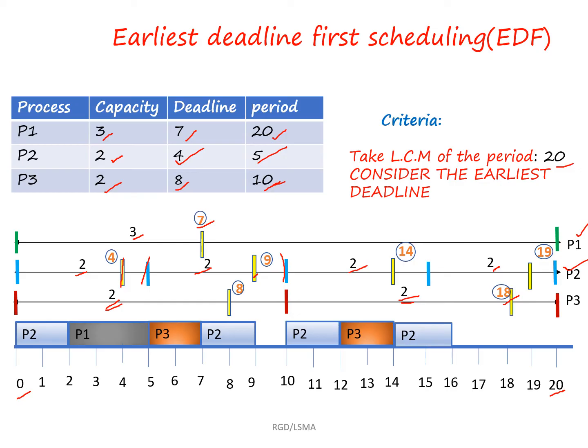Now we will see how to allocate the processes in the schedule. Since this is Earliest Deadline First, we check which process has the earliest deadline. Out of P1, P2, and P3, P2 has the earliest deadline of 4. So P2 is allocated first, and it has to execute 2 units before deadline 4.